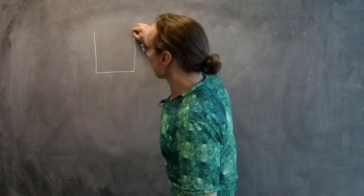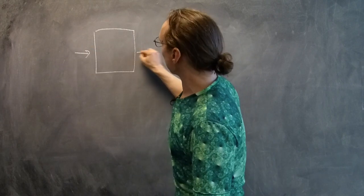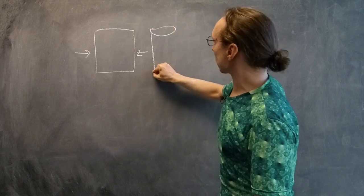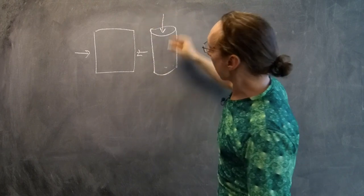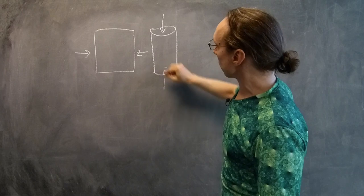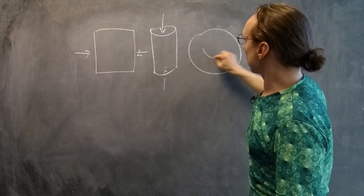And the first thing we do is we glue the left side to the right side to get a cylinder. Now we're going to glue the top, which is open, to the bottom, which is open, and we'll get the promised donut.